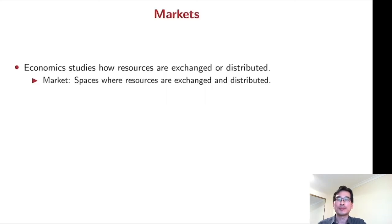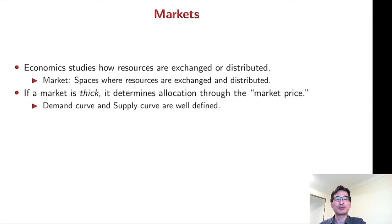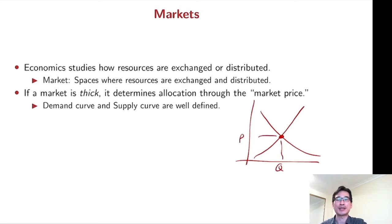What is a market? Economics studies how resources are exchanged or distributed. We call any space where resources are exchanged and distributed a market. If our market is thick, then there are lots of demand and supply, and it determines allocation through the so-called market price — the demand curve and supply curve. Supply and demand determine this market price and quantity, which is basic economics.